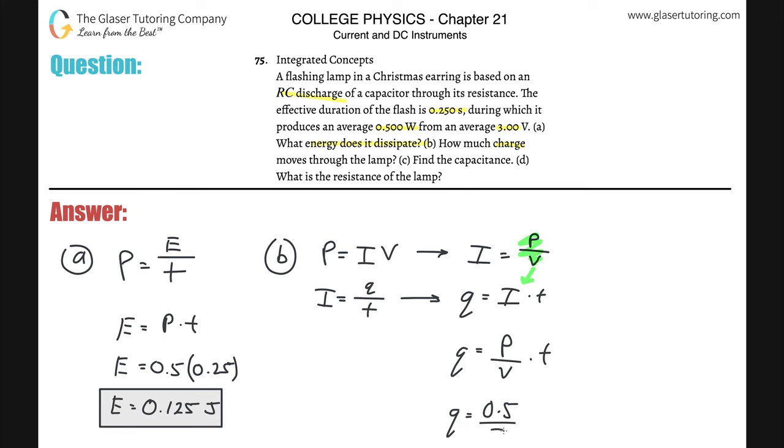The voltage is 3 volts, and then you're going to multiply it by the time of 0.25. So it's going to be 0.5 over 3 times 0.25, and we come up with the value here that the charge is going to be 0.0417 coulombs.